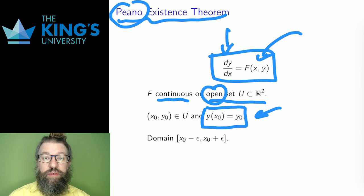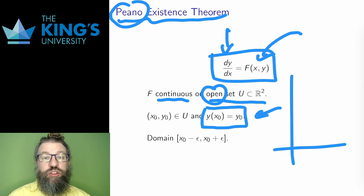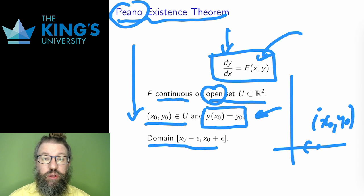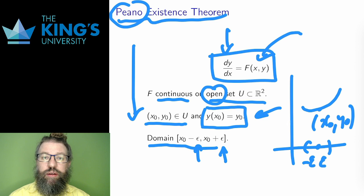That condition is here, y of x0 equals y0. And that corresponds to a point x0, y0 in the domain of the function F. So this point x0, y0 needs to be in this open set U. Then, under all these conditions, the theorem says that a solution exists. That solution has a domain x0 minus epsilon to x0 plus epsilon, where epsilon is some small positive number. You will find throughout the formalization of calculus that epsilon is very frequently used as a variable for small positive numbers in these kinds of proofs.